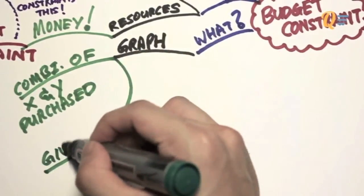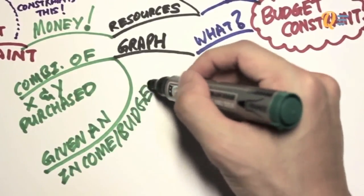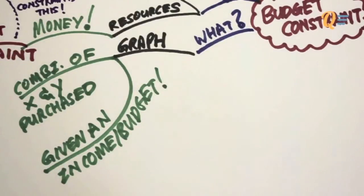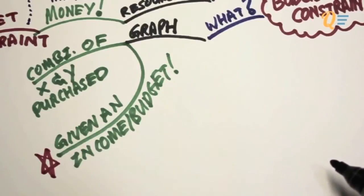Of course, this combination is restricted given an amount of income that the consumer has, or what we call budget. The key point is given an income or a budget.